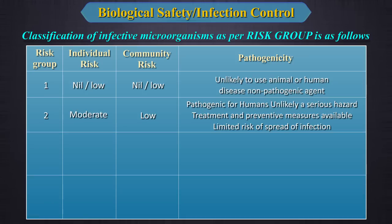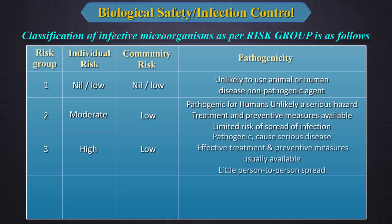Risk Group 3 means the individual risk is high and the community risk is low. It is pathogenic and can cause serious disease, but effective treatment and preventive measures are available and there is little chance of person-to-person spread.